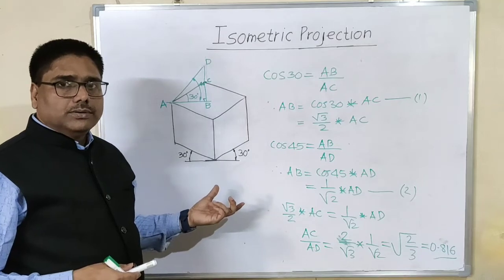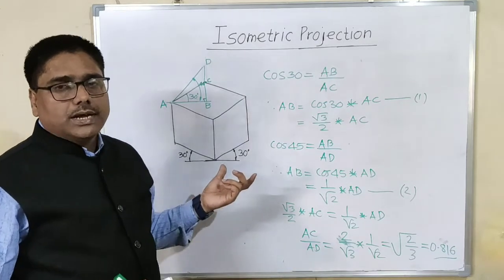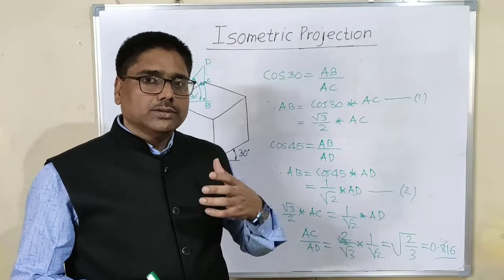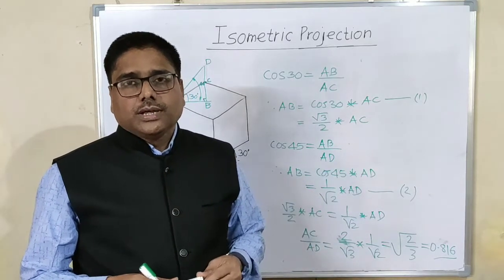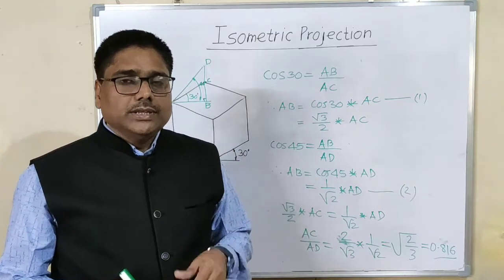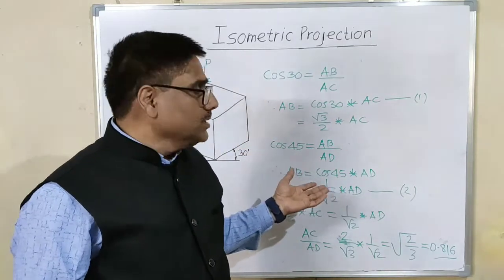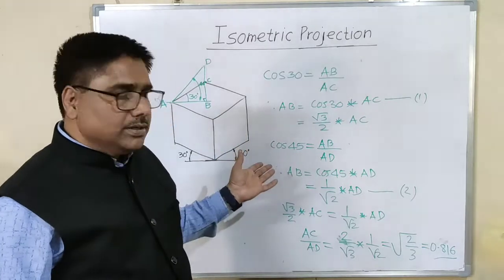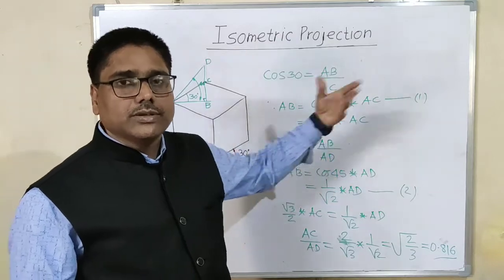To transfer accurately the reduced dimensions, we have to go for some graphical method. For that we need to construct isometric scale. If you use given dimensions in an orthographic view as it is while drawing isometric, then it is called isometric view. But in real practice, as each and every dimension is reduced by some extent, we need to convert the reduced dimensions graphically and transfer these dimensions accurately.